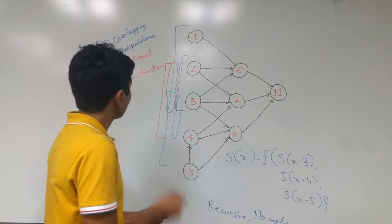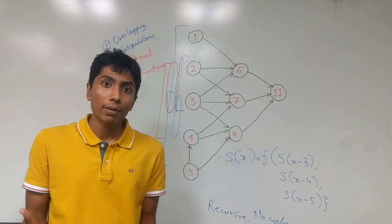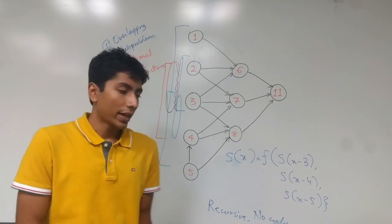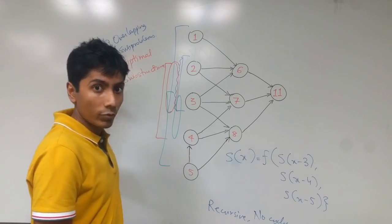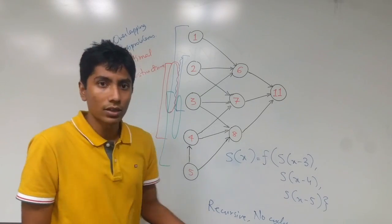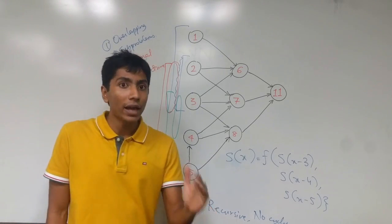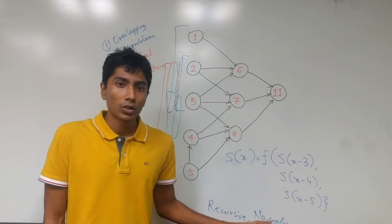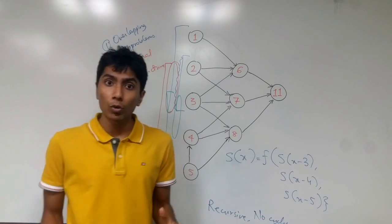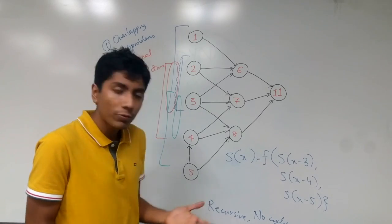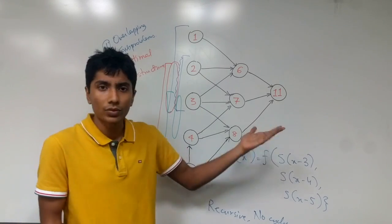Now these two properties define what a dynamic programming problem is. If you can do these two things for that problem, and of course if it is recursive, otherwise these things won't even come in, then you can say that yes, with guarantee, I can do dynamic programming on this problem to solve it.